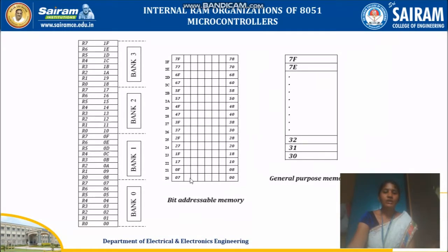It has got 4 register banks — bank 0, bank 1, bank 2, bank 3 — a bit addressable area, and a byte addressable area. The bit addressable area is of 16 bytes and the byte addressable area is of 80 bytes. Each register bank is of 8-bit.